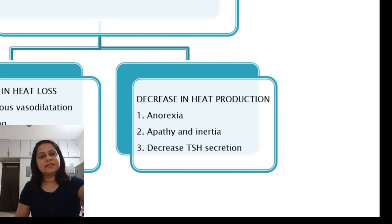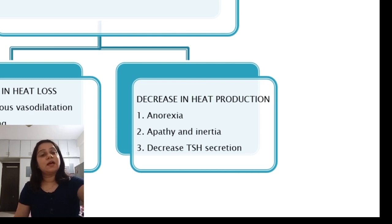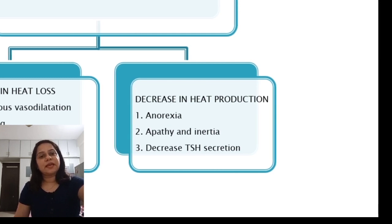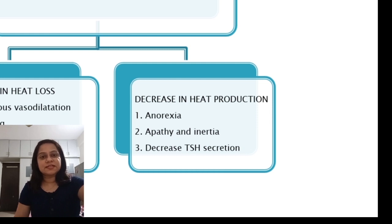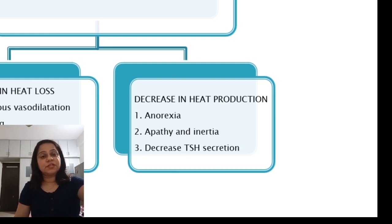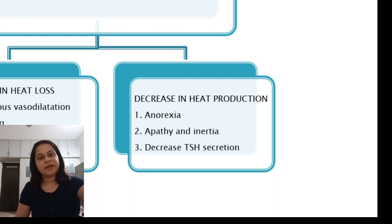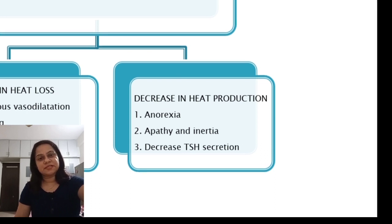Heat production is decreased by anorexia, apathy, and inertia. There is also a decrease in TSH secretion, which causes a decrease in thyroid hormone secretion, and thus the basal metabolic rate is reduced.